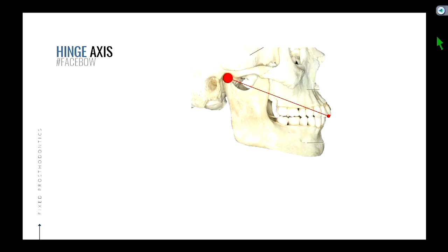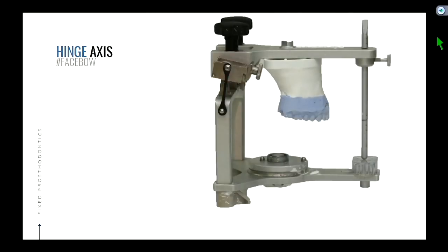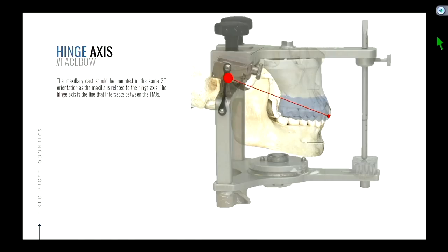We want to put the maxillary cast in the same orientation — the same distance away from the hinge axis on the articulator as it is in the mouth. This way it best mimics what the patient does. Whatever that distance was, you want to mimic it on your articulator. The first 25 degrees of opening is pure rotation around the horizontal axis — the line that bisects the condyles. How do we mimic that on the articulator?